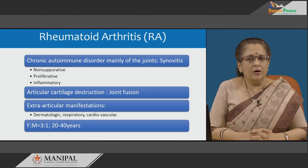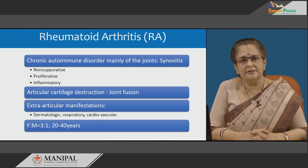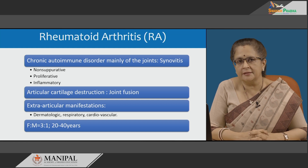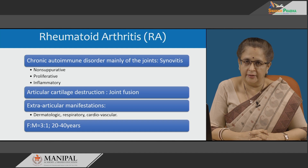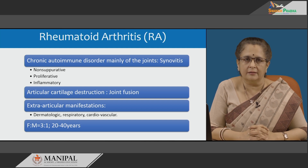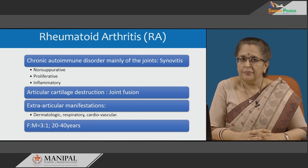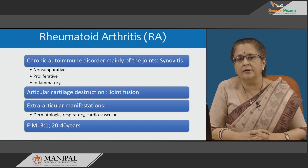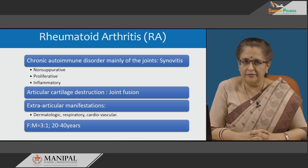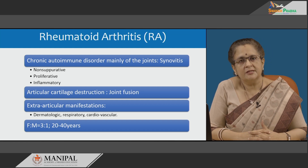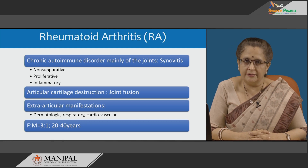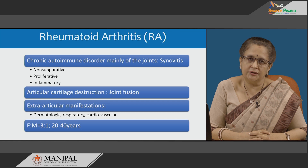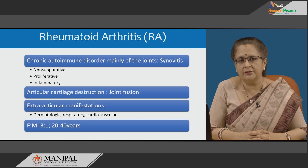Rheumatoid arthritis is a chronic autoimmune disorder mainly affecting the joints — arthritis meaning inflammation of the joint. There is synovitis which is non-suppurative, proliferative and inflammatory, leading to articular cartilage destruction, fibrosing, and finally bony ankylosis and fusion of the joint. Extraarticular manifestations include rheumatoid nodules in the skin, and involvement of the respiratory and cardiovascular system. It is more often seen in females with a ratio of 3 to 1, in the age group of 20 to 40 years.